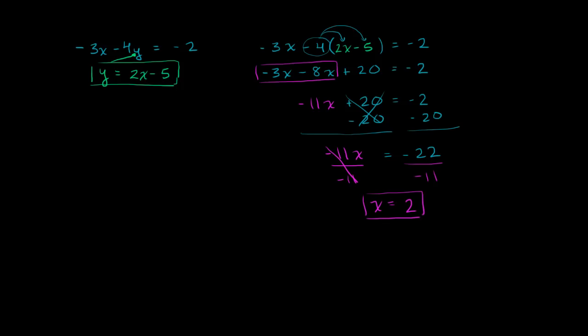And so we're not quite done yet. We've done, I guess you could say, the hard part. We've solved for x. But now we have to solve for y. And we could take this x value into either one of these equations and solve for y. But this second one has already explicitly solved for y. So let's use that one.